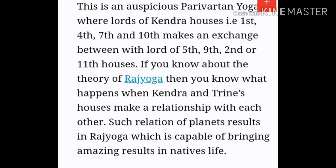In Vedic Astrology, houses 1, 4, 7, and 10 are known as Kendras, which form the pillars of your horoscope. The houses 1, 5, and 9 are called Trikonas — they are houses of higher learning, called Dharma houses. The houses 2 and 11 represent wealth and gains. Whenever there is an exchange between the lords of the Kendra houses 1, 4, 7, 10 and the lord of the Trikona houses 5 and 9, or the lord of Labasthanas 2 and 11, that forms an auspicious Mahaparivartan Yog. It is a special type of Rajyog in Vedic Astrology.